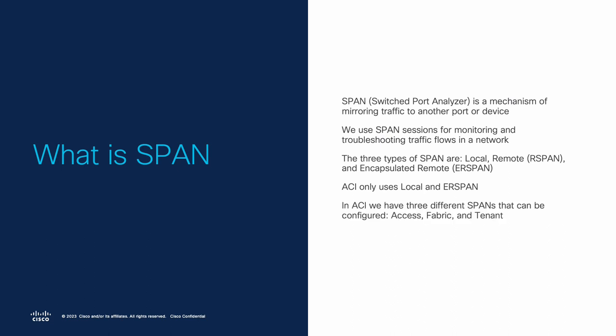In ACI, we do have three different configurations for SPAN, and those are access, fabric, and tenant. We will talk about these more in detail later on.